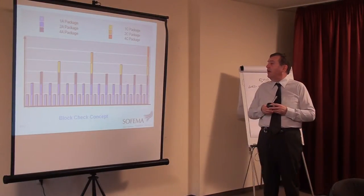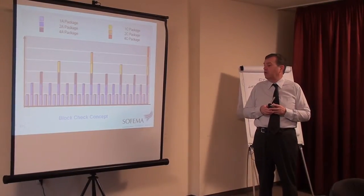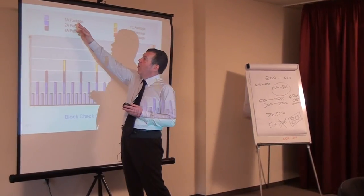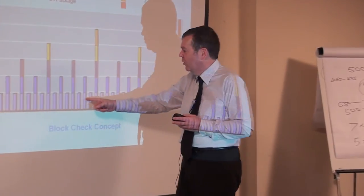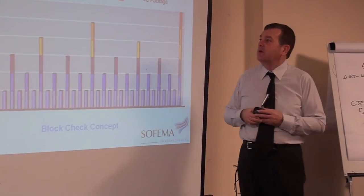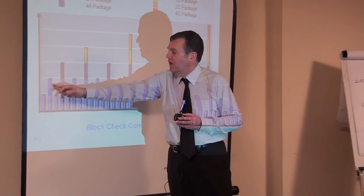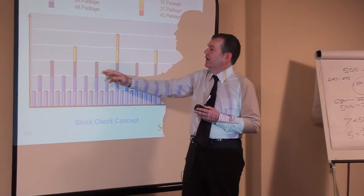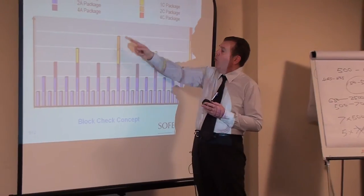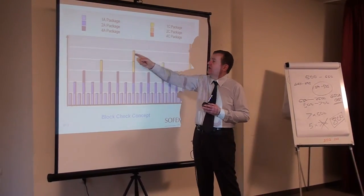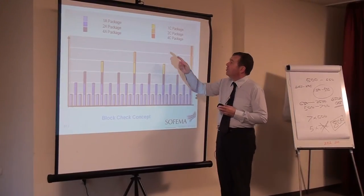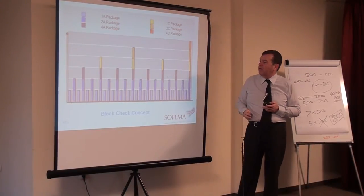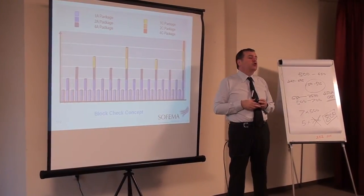What we're looking at here is a concept which is called the block check concept. Here we are doing 1A checks, 2A checks, 4A checks, 1C checks, 2C checks, and 4C checks. We can see then with this concept that our labor requirement fluctuates.